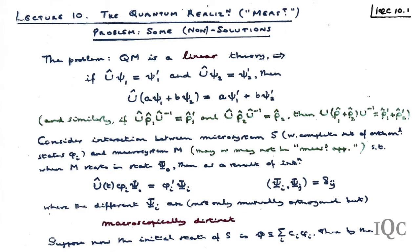Consider an interaction between a microsystem S with some complete set of eigenstates φᵢ and some macrosystem M. It may or may not have been deliberately set up as a measuring apparatus, but when the apparatus starts in state ψ₀ and the system starts in eigenstate φᵢ, then as a result of the interaction, the final state is one in which the macrosystem is in some macrostate ψᵢ. The crucial point is that the final states of the apparatus corresponding to different orthogonal input states of the system are themselves orthogonal.